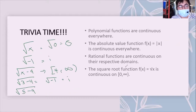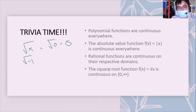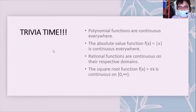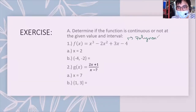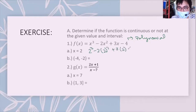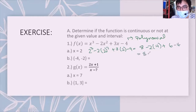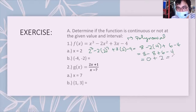Now let's do drills and exercises to understand continuity. We are going to determine if the function — a polynomial — is continuous or not at x = 2. Substituting: 2³ = 8, 2² = 4, and 3 times 2 = 6, minus 4. Simplifying: 2 times 4 = 8, so 8 - 8 = 0, then 6 - 4 = 2, so 0 + 2 = 2. Therefore, it is continuous.